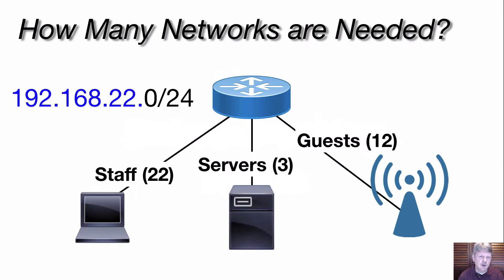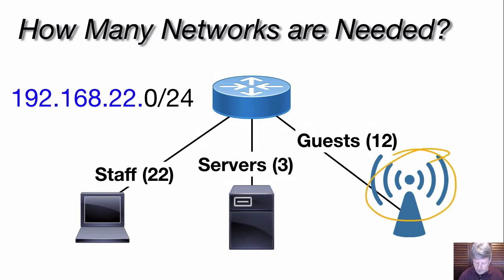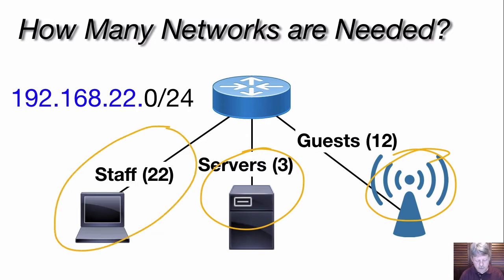Our first step is to determine the maximum number of networks that we need, and what's the largest network — in other words, the maximum number of hosts on any one of the networks. In our example, we have a branch office. We're going to break it up into three networks: a Wi-Fi network for guest access, a network with our in-house servers, and another network for our staff workstations. Three networks in total, and the largest one will have to handle 22 hosts.